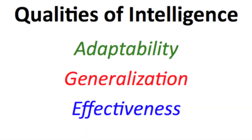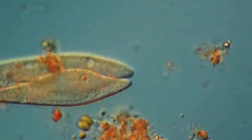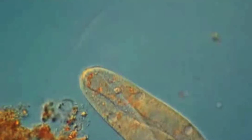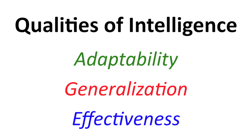For this first video, let's talk about the minimum qualities required for something to be intelligent. Here, I'll try to draw the boundary between a simple organism that executes a non-changing algorithm and a more complex system which learns and adapts to its environment in real time. There are three key features of intelligence scientists look for: adaptability, generalization, and effectiveness.